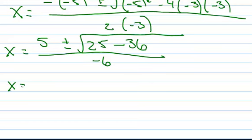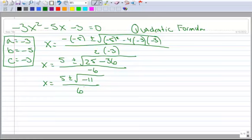Let's work it down just a little bit more. 5 plus or minus, 25 minus 36 is negative 11, all over 6. So there's that negative under the radical. So this means I have complex solutions.